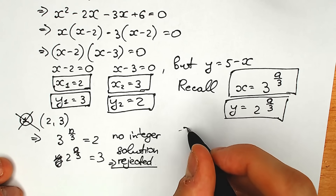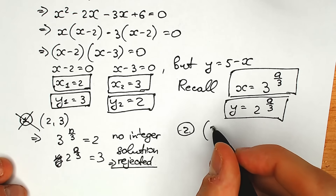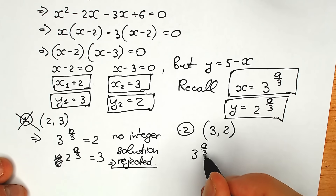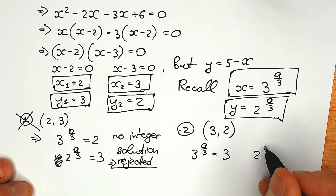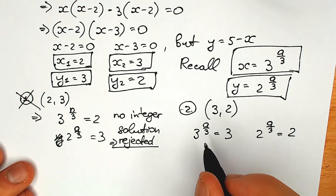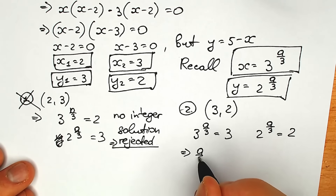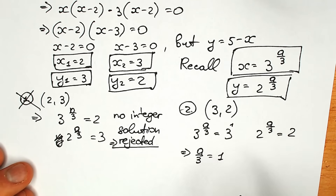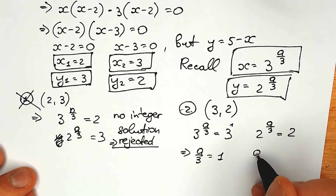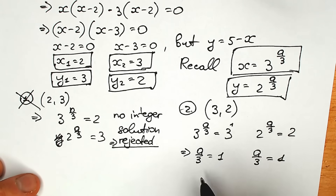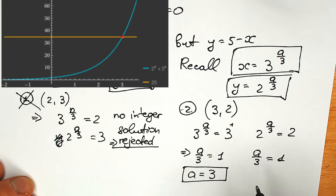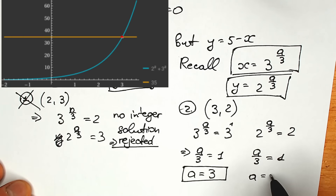Second case — our last hope: x₂ = 3 and y₂ = 2. So 3 to the power a over 3 = 3, and 2 to the power a over 3 = 2. From both equations, a over 3 = 1, giving a = 3.